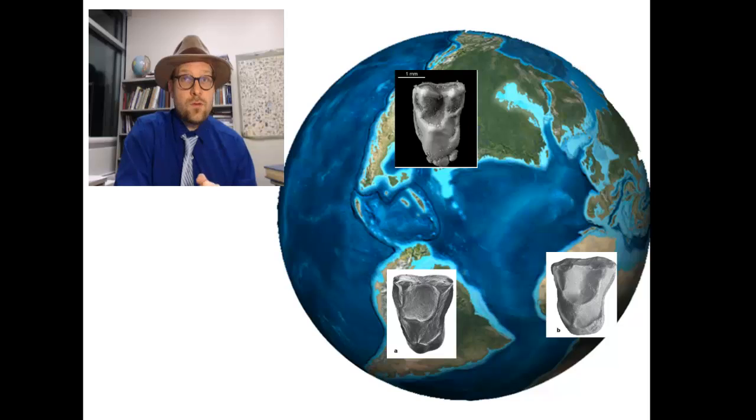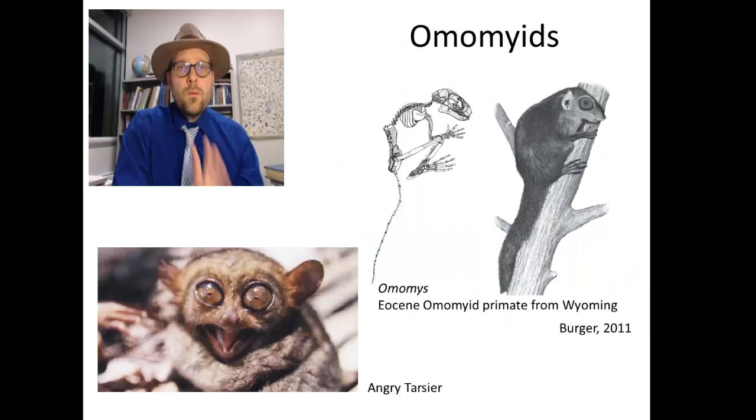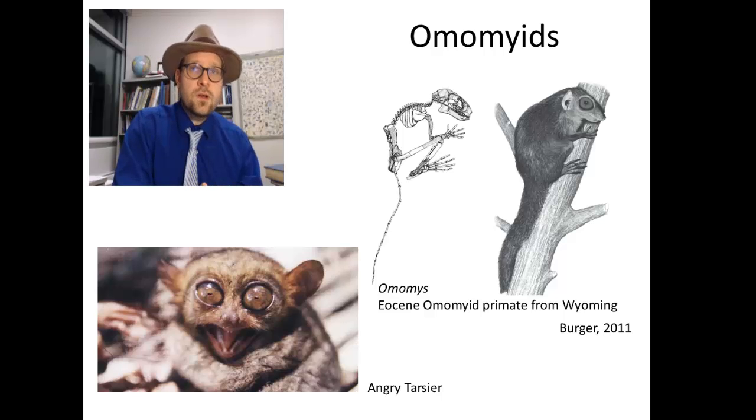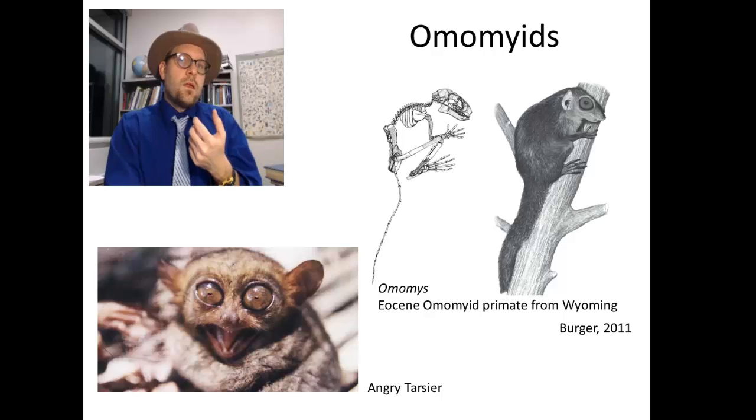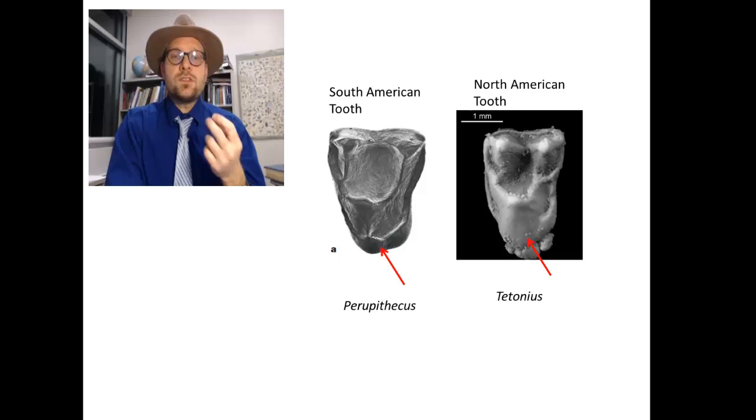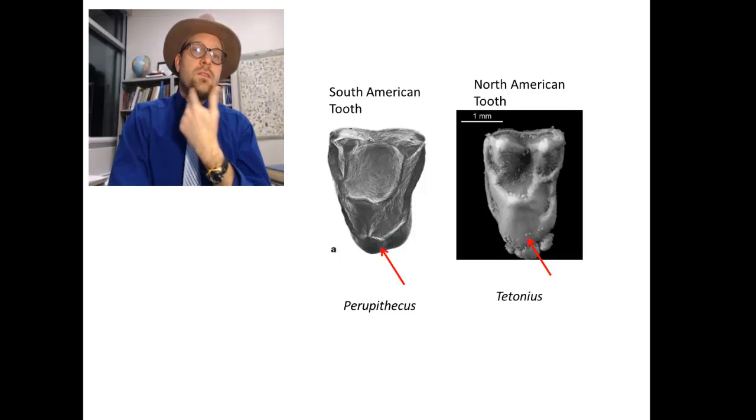Including the Omomide primates in North America and some recent primate discoveries from North Africa. Both of these groups lack a hypocone and closely resemble this odd little tooth. Omomides are well known in North America and Asia and closely related to Tarsiers, these weird bug-eyed nocturnal primates living in Southeast Asia. Omomides are often included within a branch called the Tarsia forms because of this similarity. They lack a hypocone, however, unlike the new tooth from South America, the shelf on the tooth, the cingulum, does not extend all the way around the tongue side of the tooth.